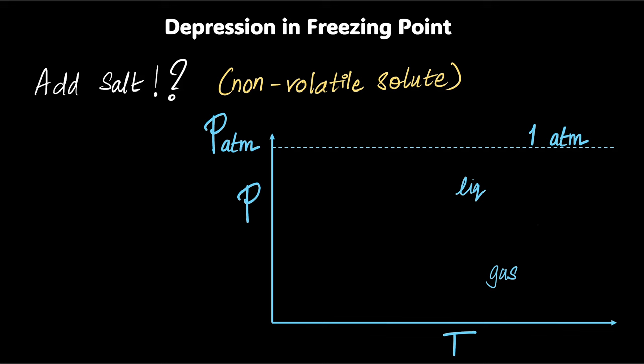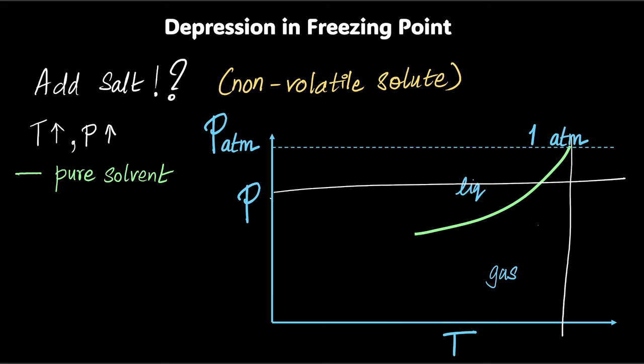But before we go to that side, what is easier to understand is when you increase the temperature, pressure increases. For a pure solvent, this is how the line looks like. On top, you've got liquid. Here, you've got the gas. Kind of makes sense. If I keep a constant pressure, let's say instead of atmospheric pressure, if I am at a high altitude place, then this liquid will boil easily. Here it was boiling at some temperature. This is a lower temperature. So all that you can figure out using this beautiful graph.